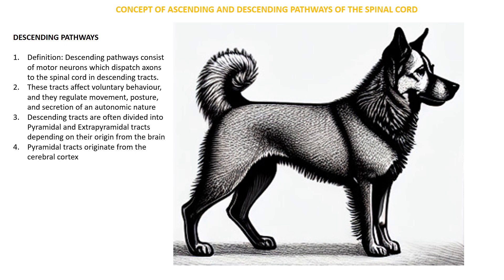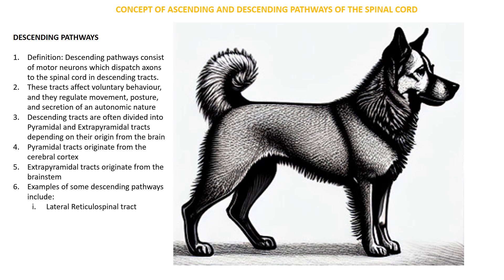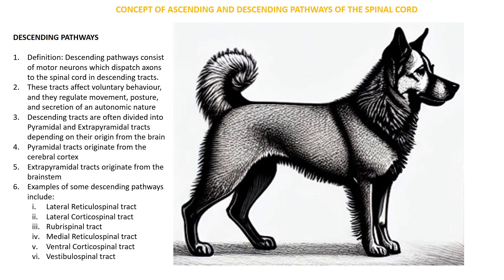The pyramidal tracts originate from the cerebral cortex, while the extrapyramidal tracts originate from the brainstem. Examples of descending pathways identifiable on a cross-section of the spinal cord include the lateral reticulospinal tract, the lateral corticospinal tract, the vestibulospinal tract, and the tectospinal tract. On the diagram, information interpreted in the brain is sent back to the animal's body via the spinal cord through these descending tracts, ultimately reaching structures such as muscles and glands to produce the appropriate response.